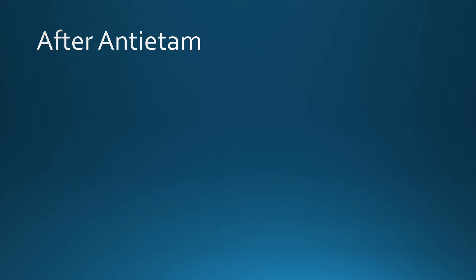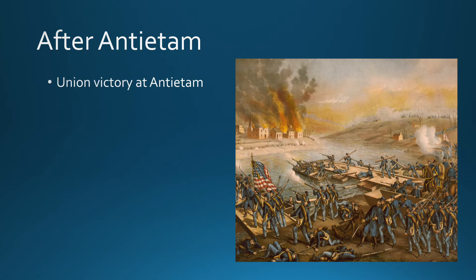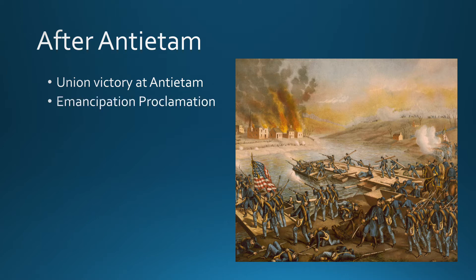We're going to pick up right after we left off last time, which is after Antietam. The Union had their biggest victory up to that point at the Battle of Antietam. This was a decision by Robert E. Lee and the Confederacy to go on the offensive and sacrifice one of their major advantages. They ended up losing.